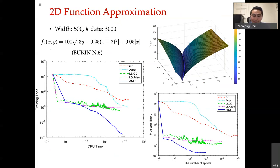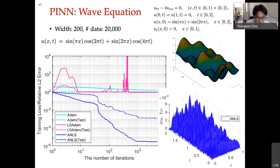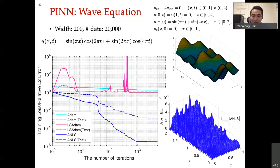The next question from Sampa: what does the network architecture look like for the wave equation? It's a very simple shallow network — two layers with width 200, and the activation function is ReLU to a power, either cubed or fourth power of ReLU. It's a dense network.